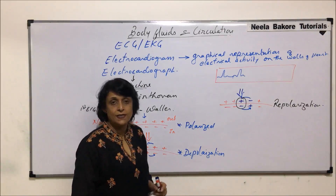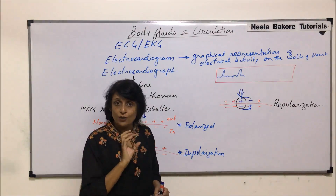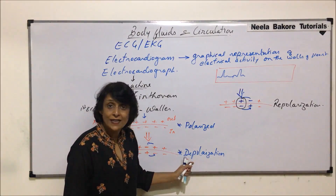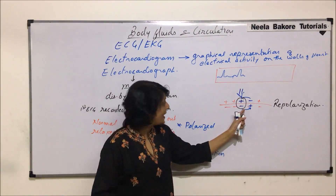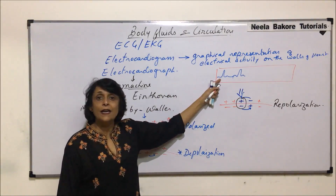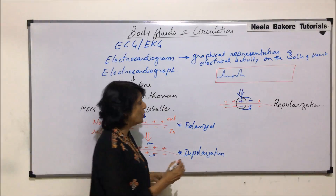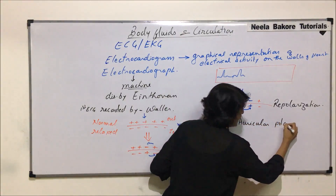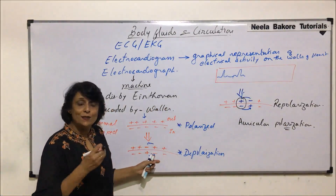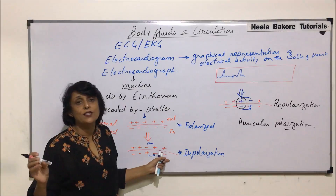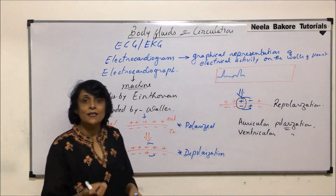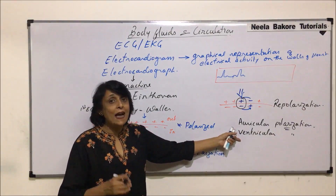When do these things take place? When the SA node generates the stimulus, depolarization is going to take place, and when the compartments relax — that is, charges return to normal position — we call it repolarization. When we interpret the ECG graph, we use terms like auricular depolarization, meaning the stimulus has been generated and the wave of contraction is being conducted, or ventricular depolarization, meaning the impulse has been received by the ventricles and they are going to contract.